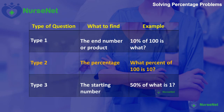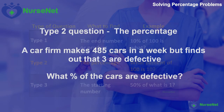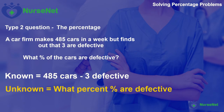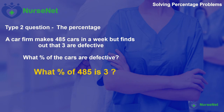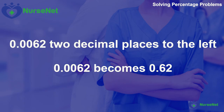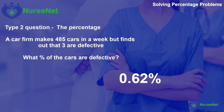Now let's look at a Type 2 question, where we want to work out the percentage if we know the starting and end numbers. A car manufacturer makes 485 cars in a week but finds 3 are defective. The starting number is 485 and the end product is 3. To find what percentage 3 is of 485, we divide the end product by the starting number: 3 divided by 485 gives 0.0062. Moving two decimal places to convert to a percentage, 0.0062 becomes 0.62%, so the total percentage of faulty cars is 0.62%.